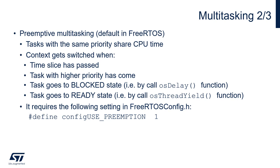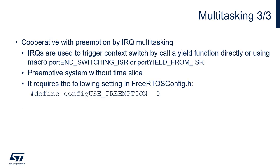We will use this configuration within our examples during this session. Cooperative with preemption by interrupt multitasking is a combination of both cooperative and preemption multitasking modes. In this case, interrupts are used to trigger context switch. It is in fact a preemption system without a time slice. To activate it, we need to set configUSE_PREEMPTION to zero within the FreeRTOSConfig.h file.